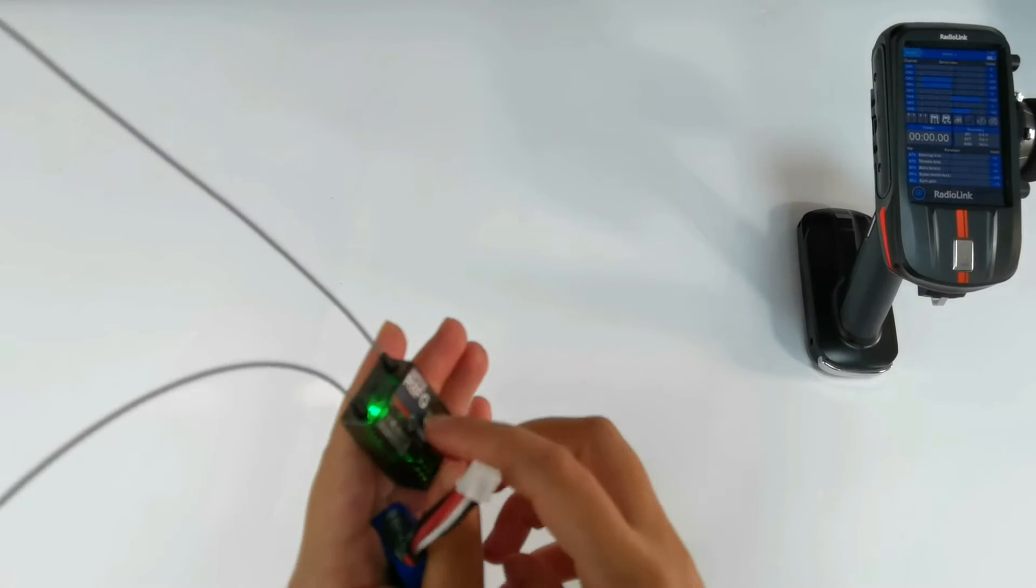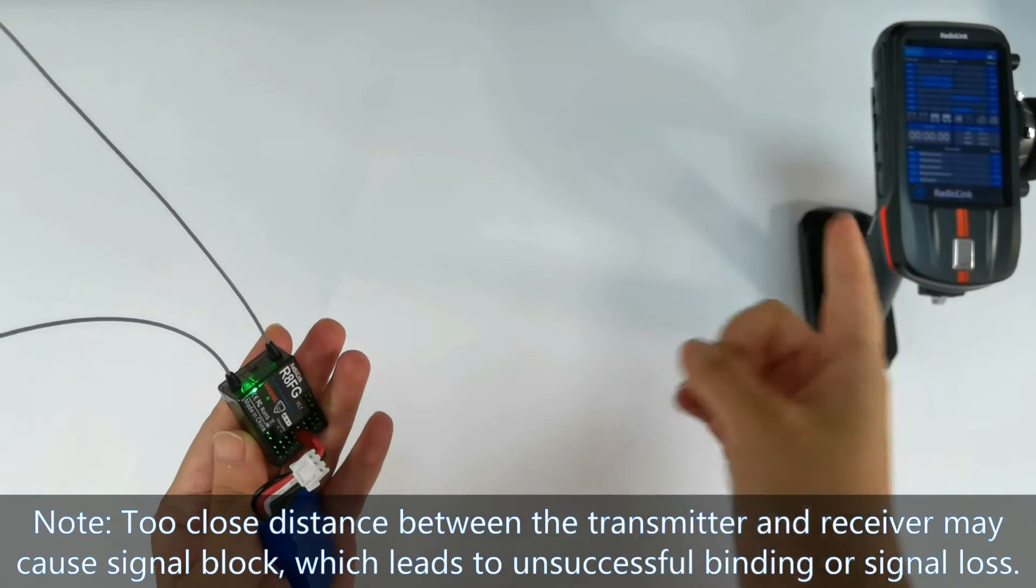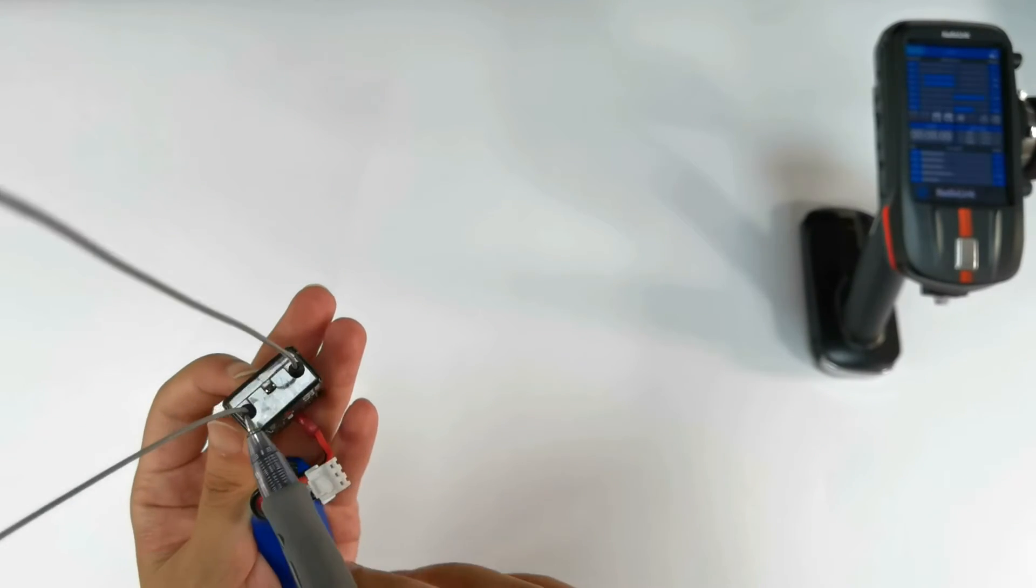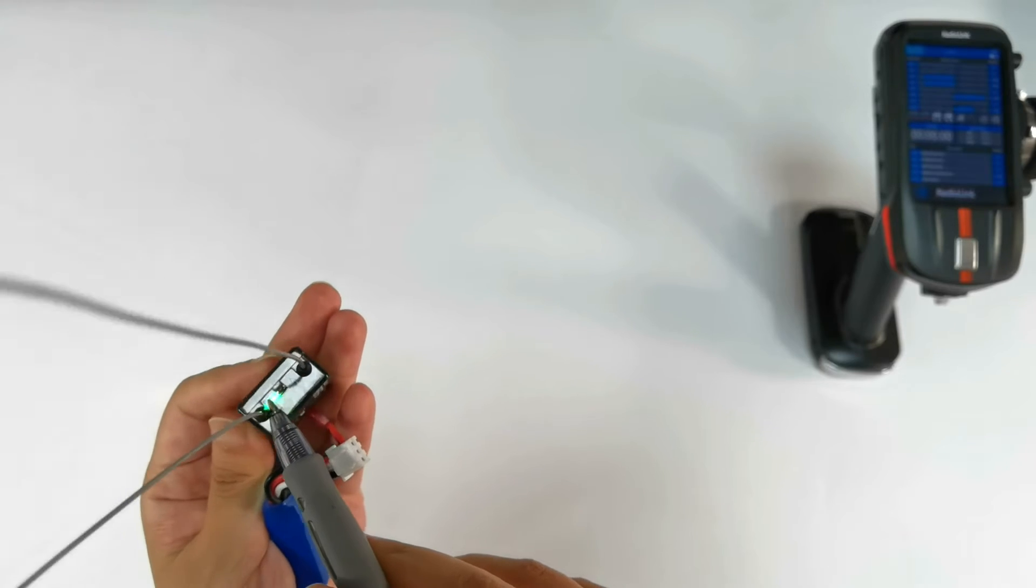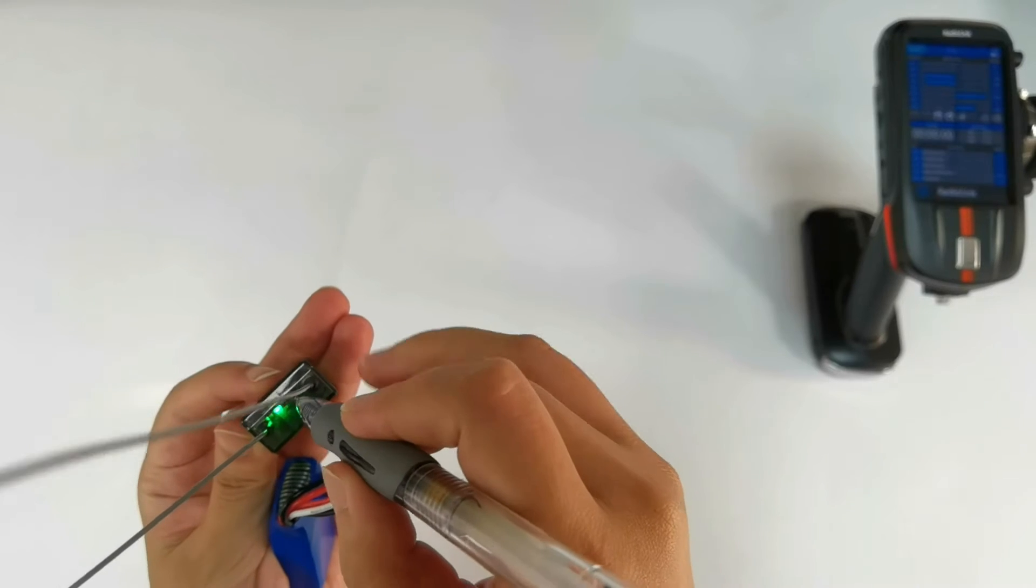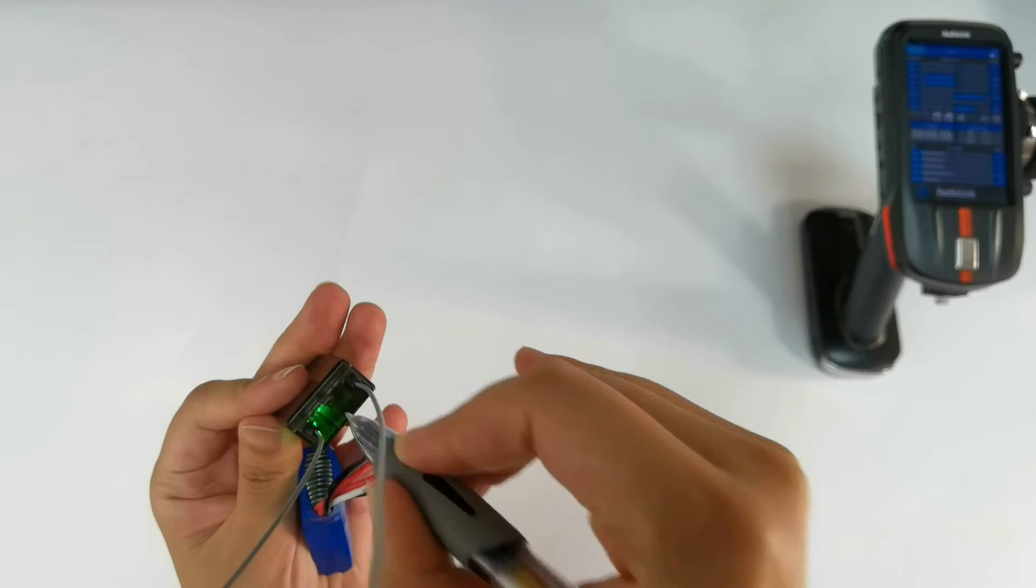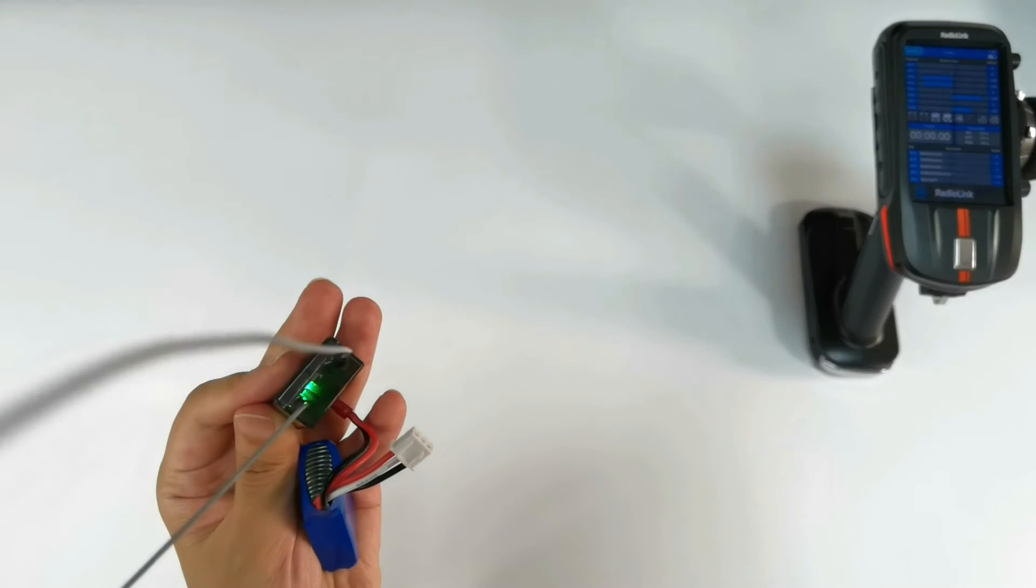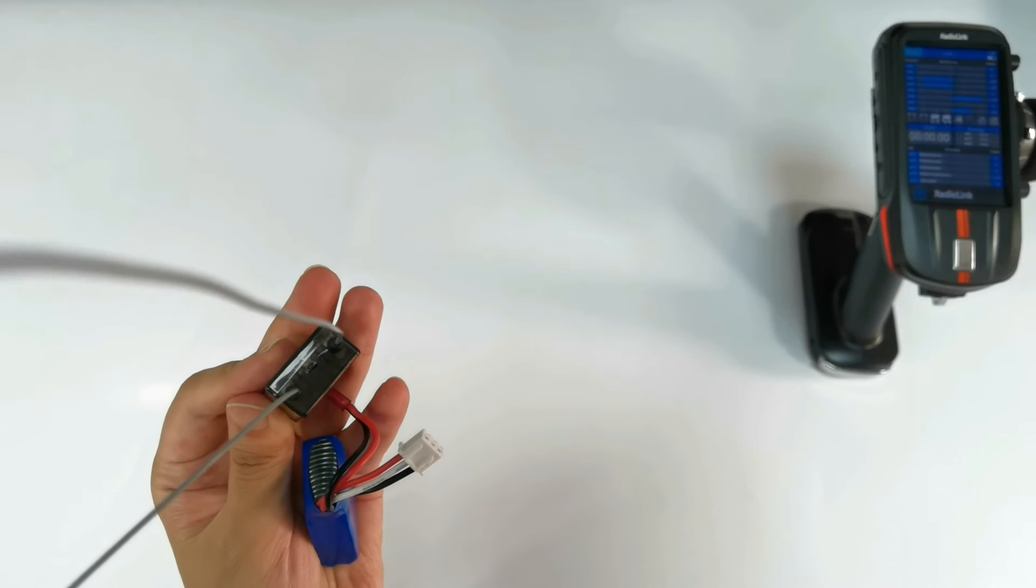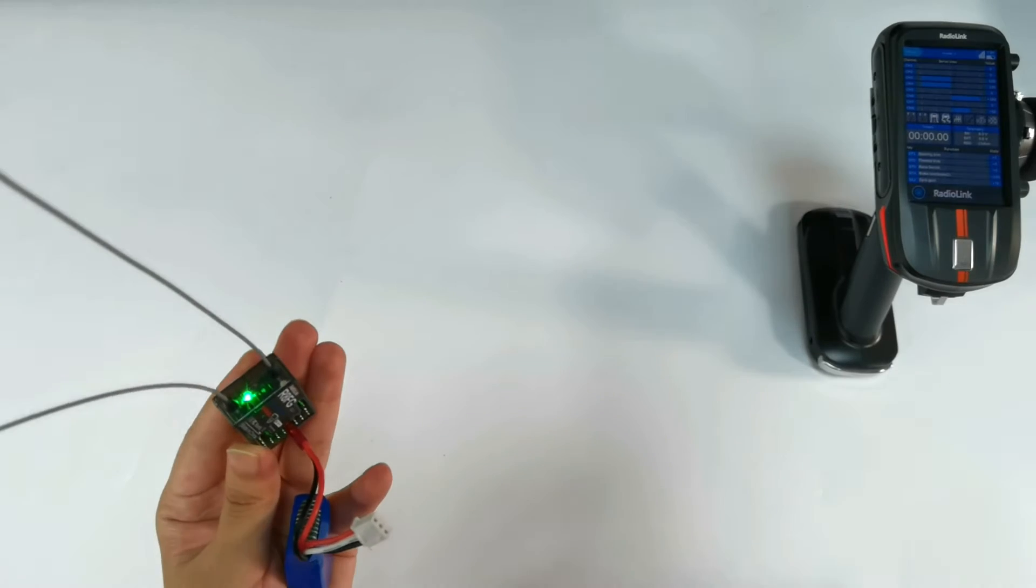The LED flashes now. Keep a distance of about more than 60 centimeters between the transmitter and receiver. There is a tiny black button on the side of the receiver. Press and hold it until the LED flashes first.